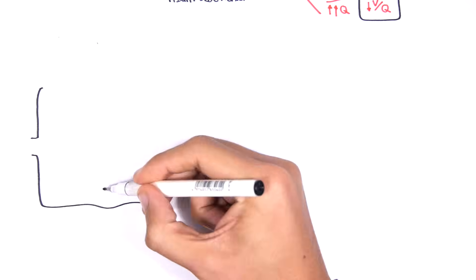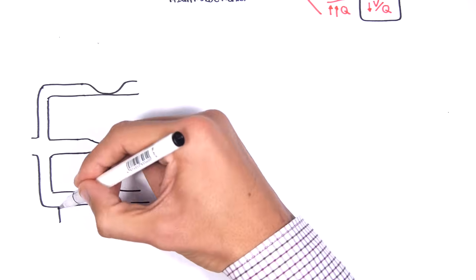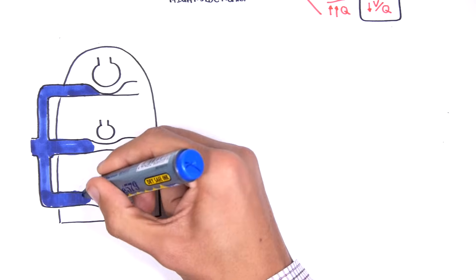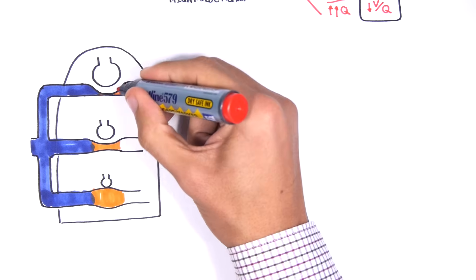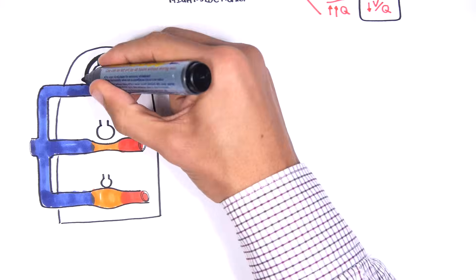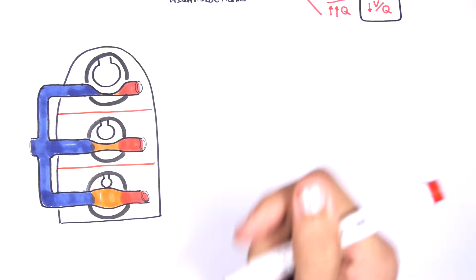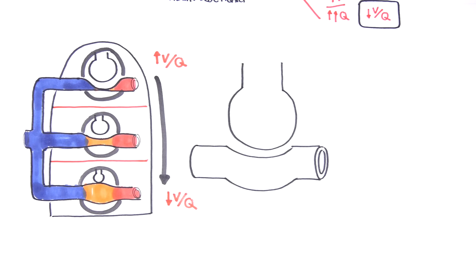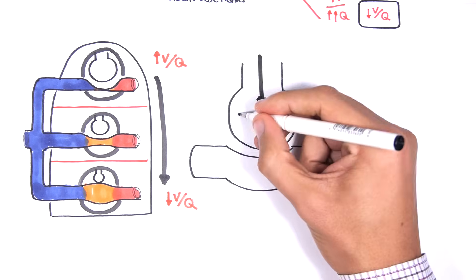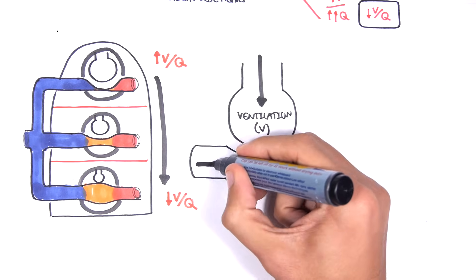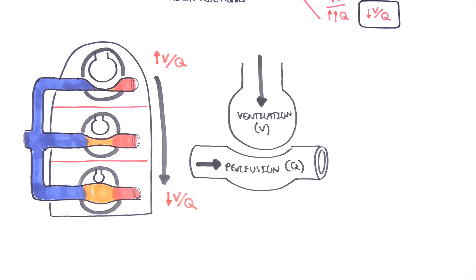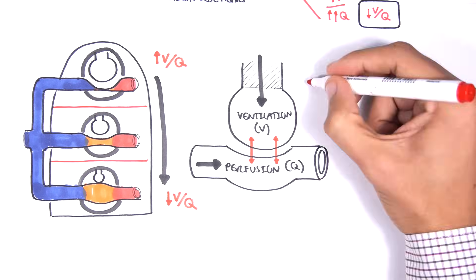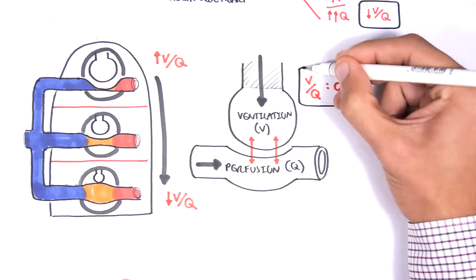In summary: ventilation — the amount of gas you breathe in — increases from the apex of the lung to the base of the lung. But perfusion — the amount of blood flow going to your alveoli — increases a lot more from apex to base. So your VQ ratio decreases from the apex to the base. Ventilation is the amount of oxygen coming into your alveoli ready for gas exchange, and perfusion is the amount of blood flow — the red blood cells — to the lungs ready for gas exchange. The average VQ ratio through the whole lung is about 0.8.